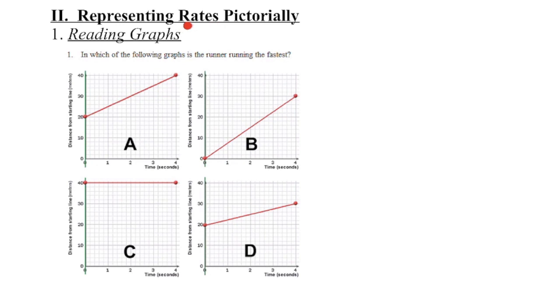A rate is a comparison of two different quantities. In all four of these graphs we can see that we're comparing the time in seconds to the distance a person is from the starting line in meters. The scale is the same in each one of these graphs, so visually we can make a quick comparison as to what's happening.